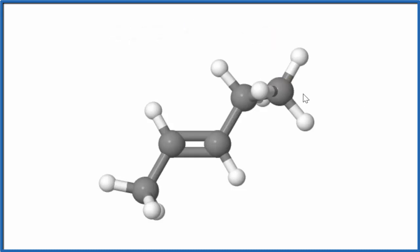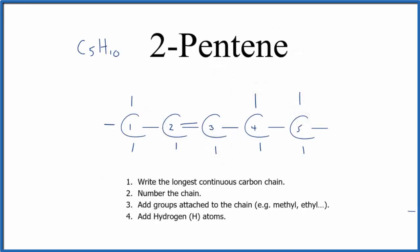These isomers will have slightly different chemical and physical properties. This is Dr. B with the structural formula for 2-pentene. Thanks for watching.